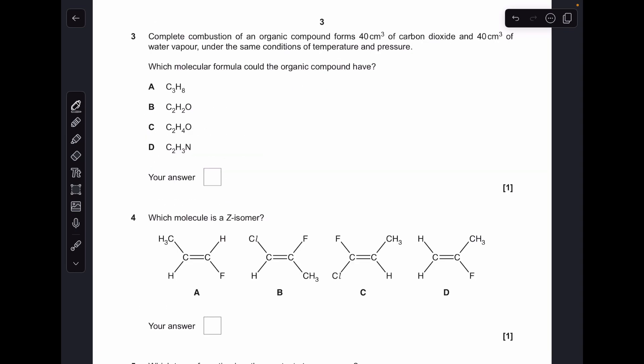Question three. The thing we need to appreciate here is volume is proportional to moles. You can see it's producing the same volume of carbon dioxide and water vapor, so the same moles of each. Since there's only one C in CO2 but two Hs in H2O, there must be twice as many hydrogen to carbon in the combusted compound. The only one that's got that is C, C2H4O.